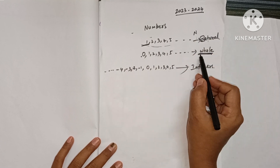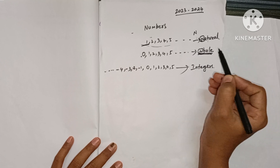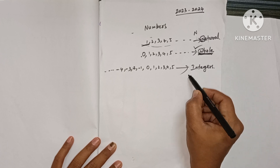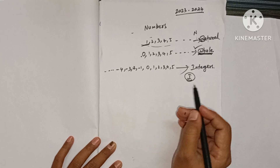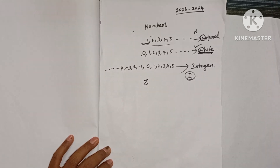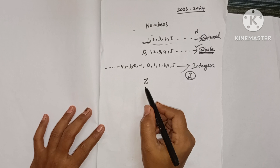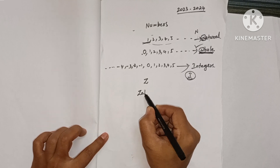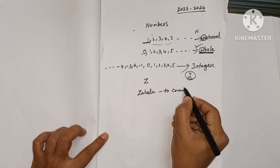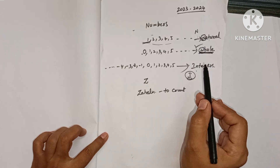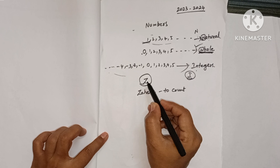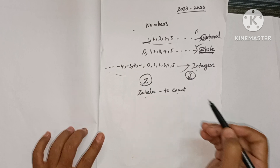Natural numbers are indicated by N, whole numbers by W. You might think integers would be indicated by I, but remember: integers are denoted by the letter Z. Z comes from the German word 'zahlen', which means 'to count'. So the set of integers is denoted by Z.